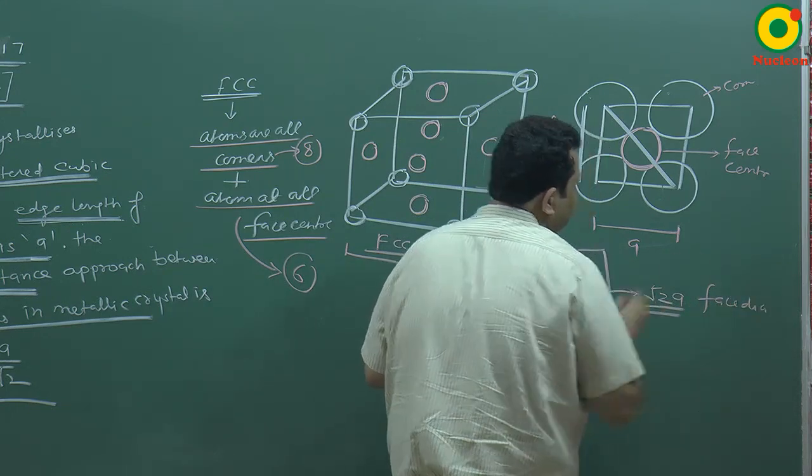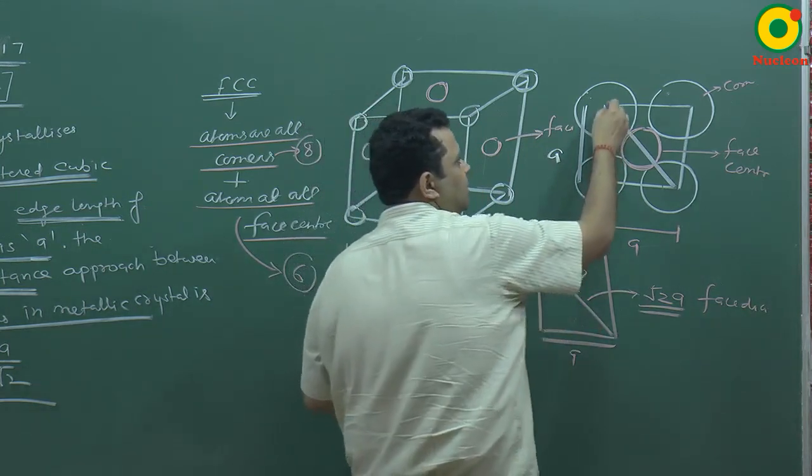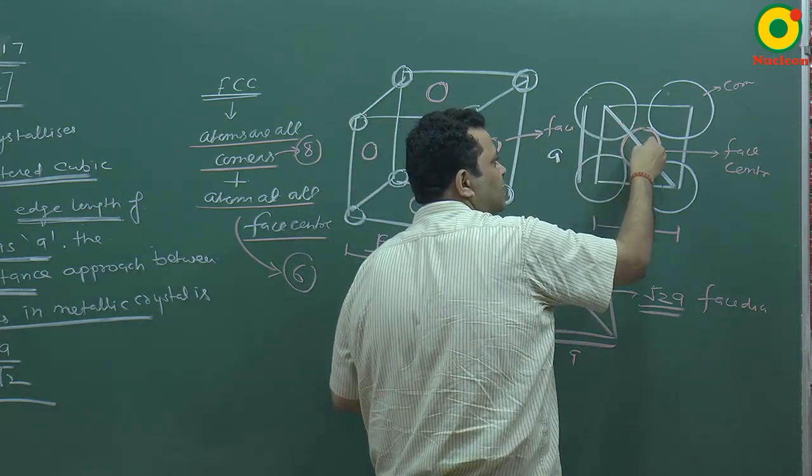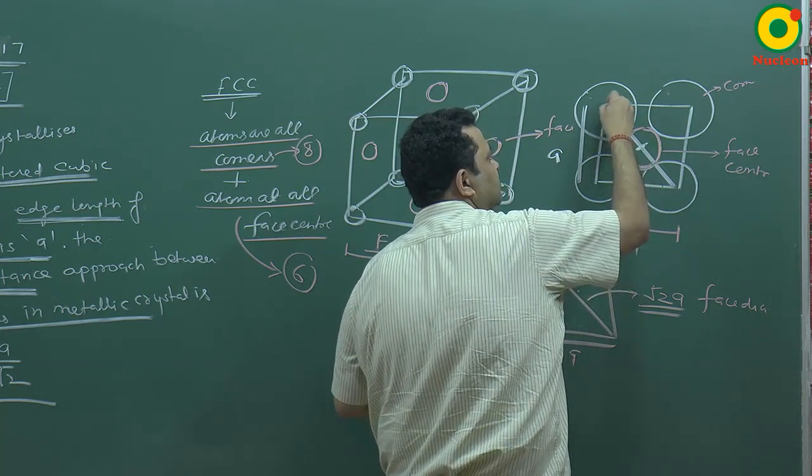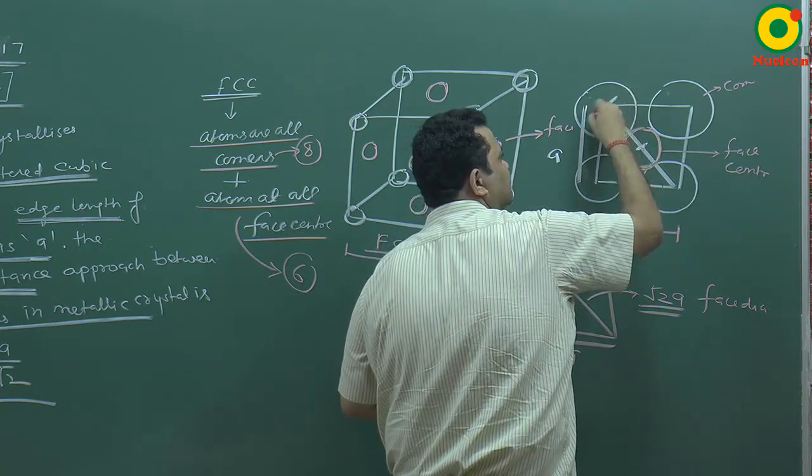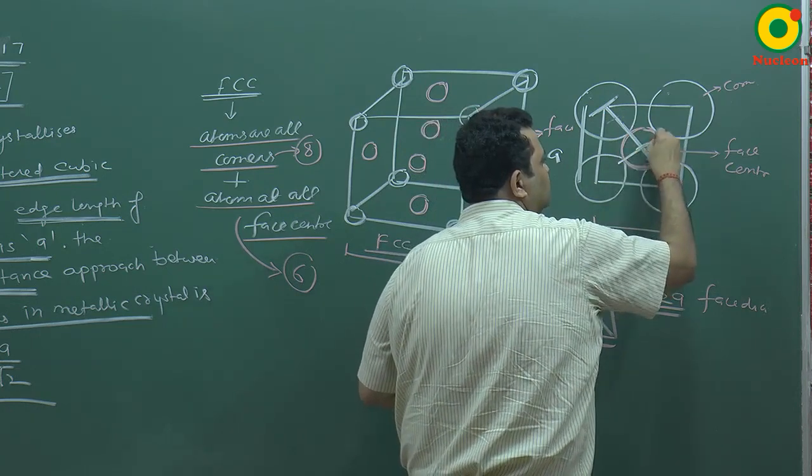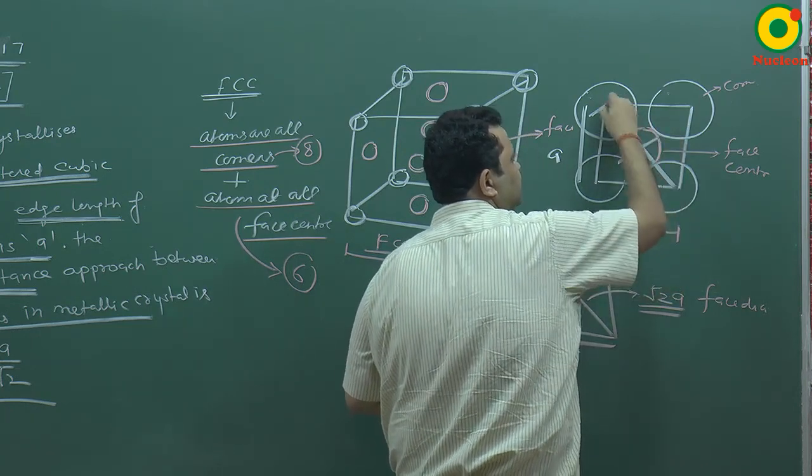Now for the face diagonal, if I consider two atoms, then the closest distance will be here. Who is talking about? Closest distance of approach between two atoms.